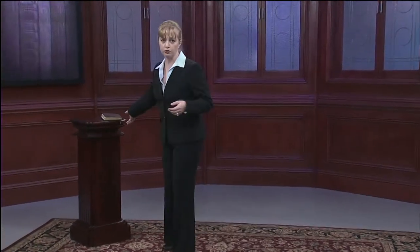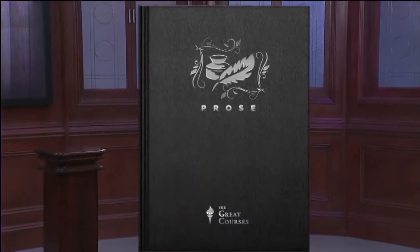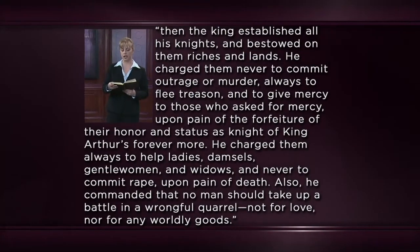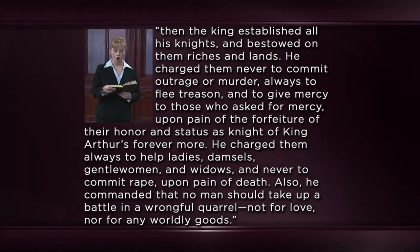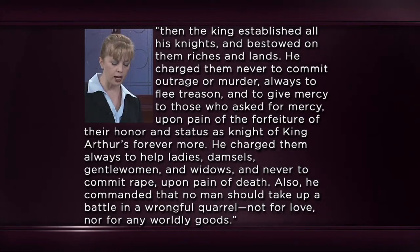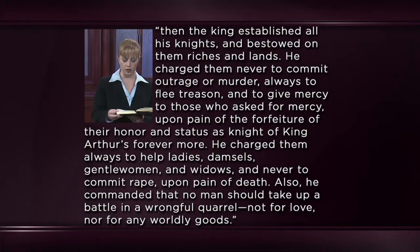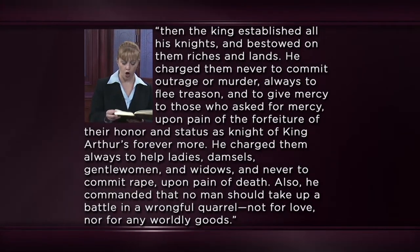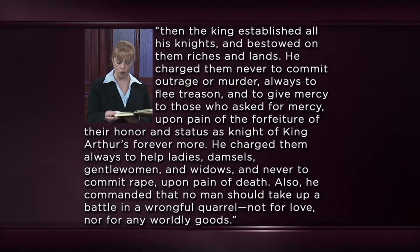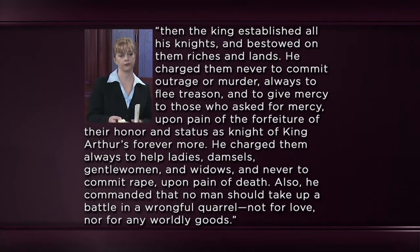Those lines begin what is known as the Pentecostal Oath, called this because King Arthur's knights swear every year at the Feast of Pentecost to obey its rules. The translation would sound something like this: 'Then the king established all his knights and bestowed on them riches and lands. He charged them never to commit outrage or murder, always to flee treason, and to give mercy to those who asked for mercy upon pain of the forfeiture of their honor and status as a knight of King Arthur's forevermore. He charged them always to help ladies, damsels, gentlewomen, and widows, and never to commit rape upon pain of death. Also, he commanded that no man should take up a battle in a wrongful quarrel, not for love, nor for any worldly goods.' Now, as I noted, this world may seem even more alien and strange to us than that described at the beginning of Moby Dick.